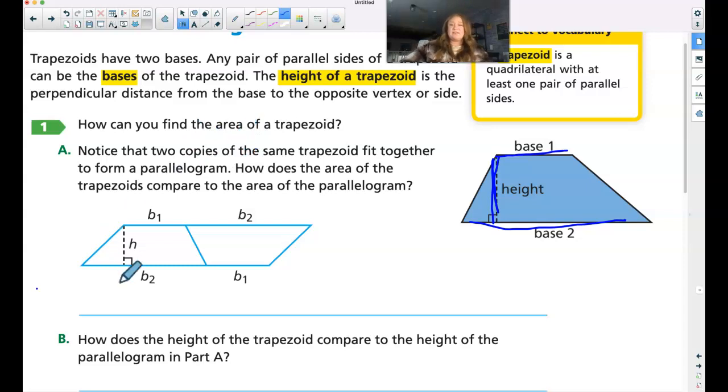So how can we find that area of a trapezoid? Notice that two copies of the same trapezoid, when I flip one, fit together to form a parallelogram.